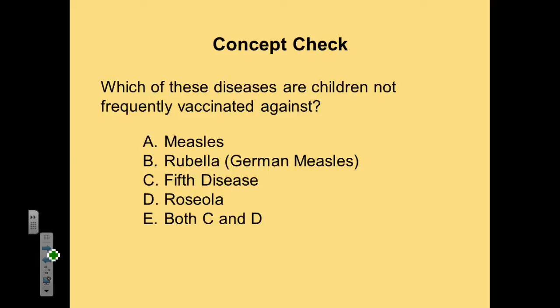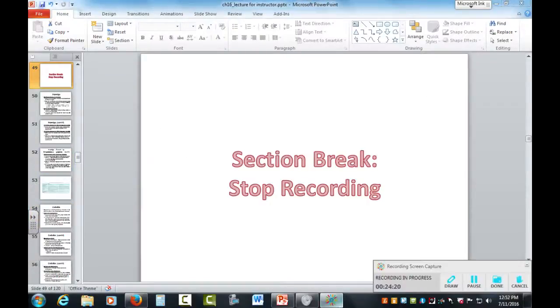Concept check, class: which of these childhood diseases are not frequently vaccinated against? Is it measles, rubella, the fifth disease, or Roseola? Go ahead and pause the video and find an answer. We are going to vaccinate for measles and rubella as part of the MMR vaccination routine. We do not routinely vaccinate for the fifth disease or Roseola, so the correct answer is E — both C and D. If you have any questions about these skin diseases, please feel free to post them on the discussion board or shoot me an email. Happy studies!